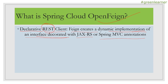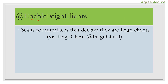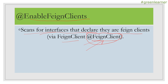The first annotation is @EnableFeignClients — this is the core annotation. When you write @EnableFeignClients on your main application class, it scans for interfaces that declare their Feign clients via the @FeignClient annotation. So when you have @EnableFeignClients, it is going to scan all of your project directories and look for the @FeignClient annotation. If there is any interface annotated with @FeignClient, it will consider that interface and implement it internally as a service which will call a third party.